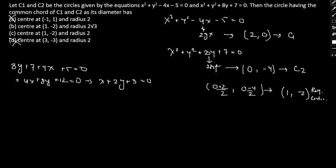If we talk about distance from the center of C1, it will simply be |2 + 0 + 3|/√(1² + 2²) = 5/√5 = √5. So therefore, radius of C1 can be given as √(4 + 5) = 3.